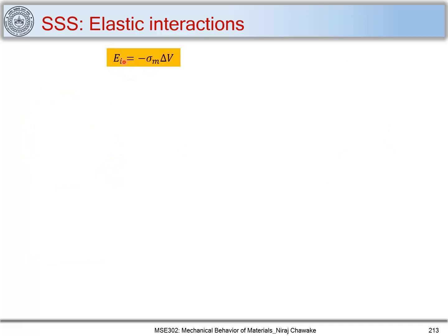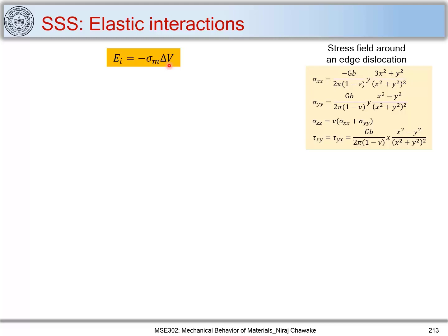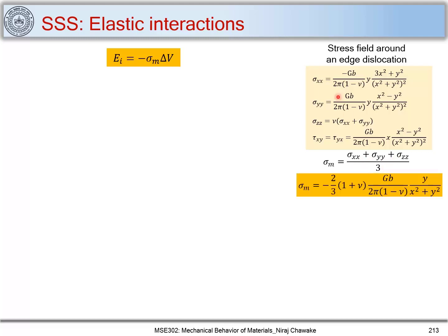Now, with Ei = −σm · ΔV, let's consider the example of an edge dislocation, which also has a hydrostatic component. The mean stress is (σxx + σyy + σzz)/3, and when we add those three terms, the mean stress works out to be −(2/3) · (1 + μ)·Gb / [2π(1 − μ)] · y/(x² + y²). For all y positive, σm is negative (compressive); for y negative, σm is positive (tensile).